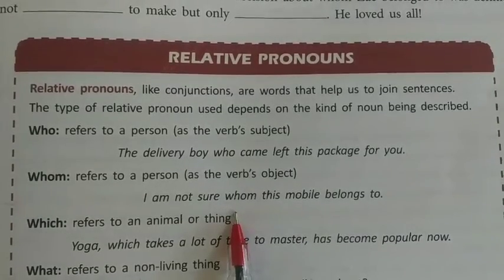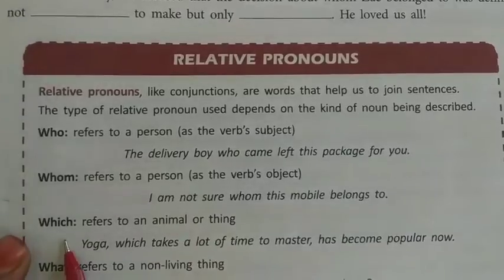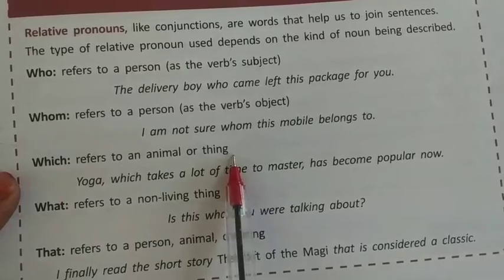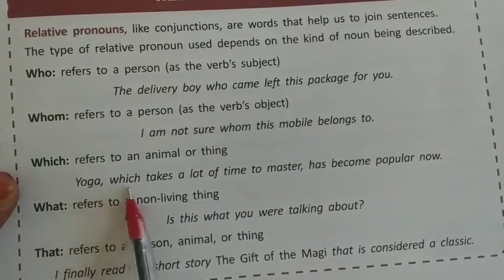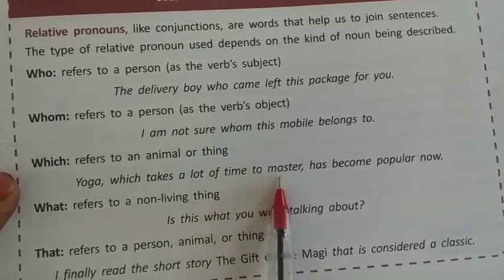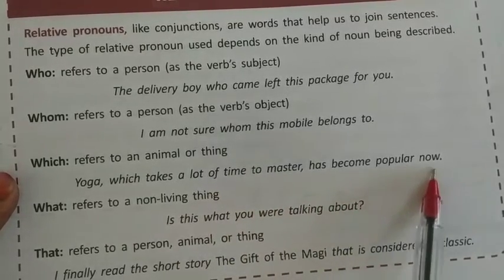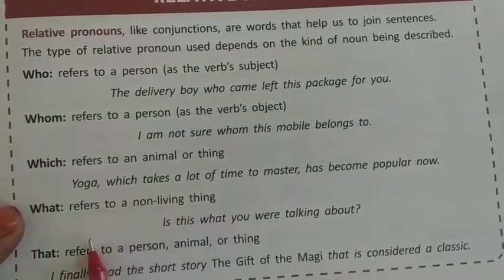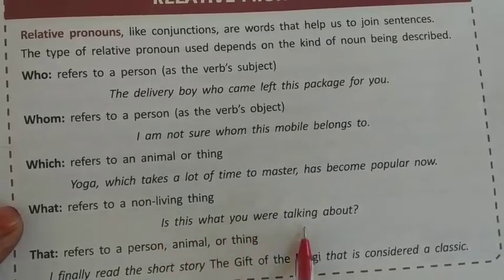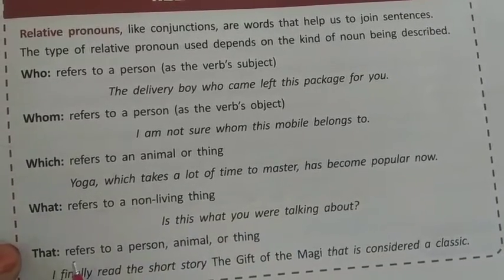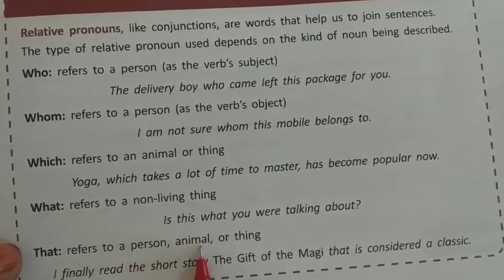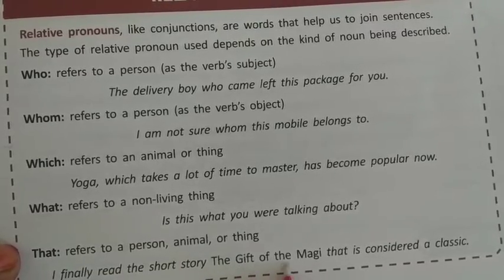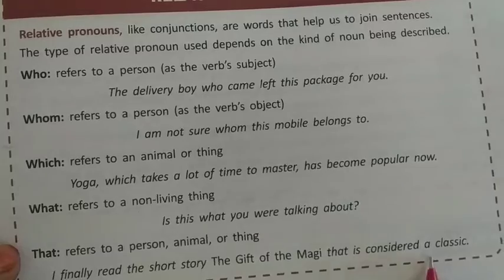'Which' refers to animals or things. Example: 'Yoga, which takes a lot of time to master, has become popular now.' 'What' refers to a non-living thing. Example: 'Is this what you were talking about?' 'That' refers to a person, animal, or thing. Example: 'I finally read the story The Gift of the Magi, that is considered a classic.'